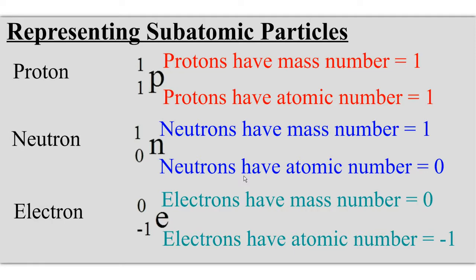So let's see how we represent subatomic particles. First of all, protons will be generally represented with a P 1 over 1. Remember that this represents the atomic number, and the top number represents the mass number. Neutrons are represented with a 1 over 0 N, and electrons are represented with a 0 negative 1 E.